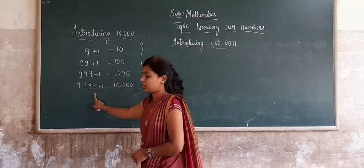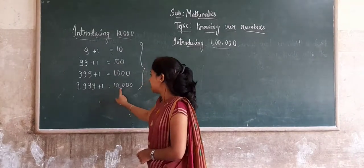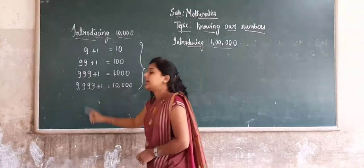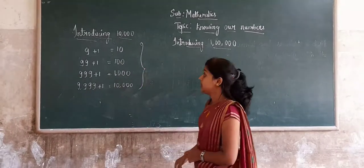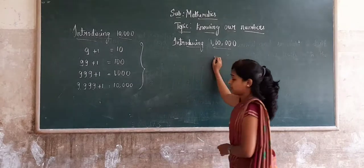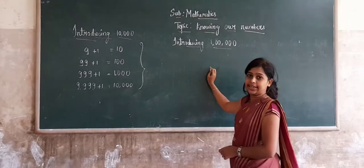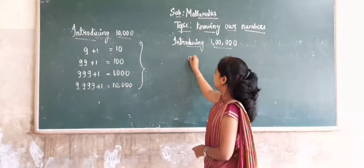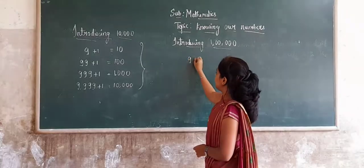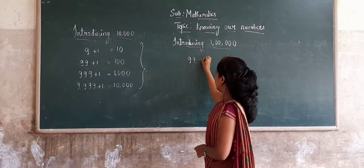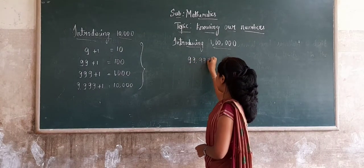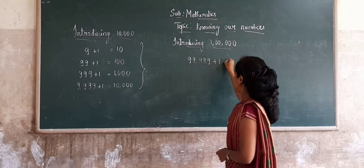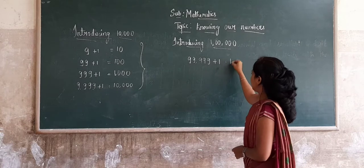To introduce lakh, we consider the greatest 5-digit number, which is 99,999. Add 1, we get 1,00,000 — that is one lakh.